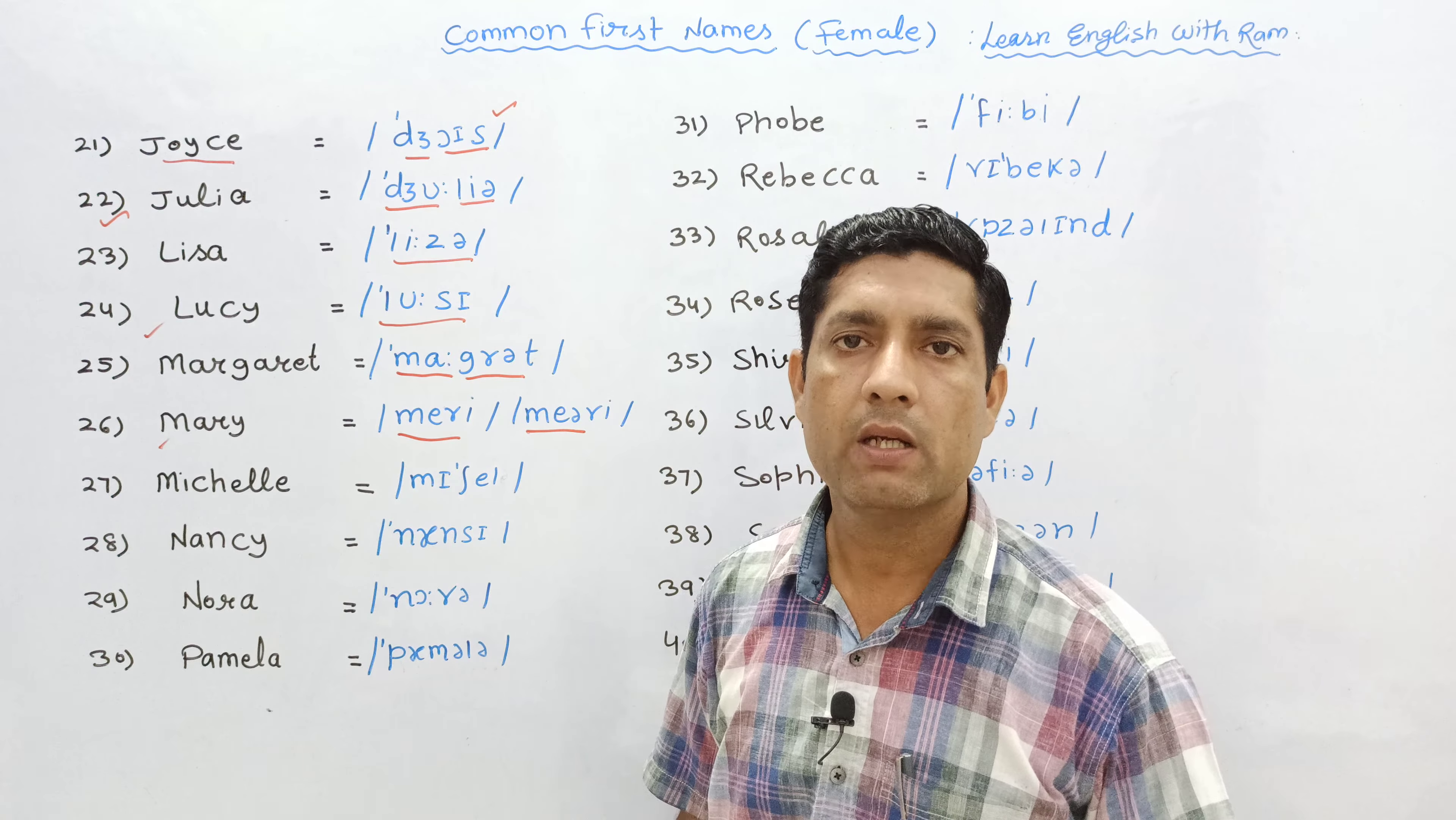Next one is very important, we often mispronounce it. Its right pronunciation is Michelle. 28th is Nancy. 29th is Nora.